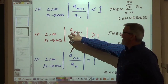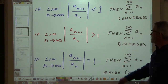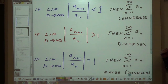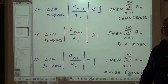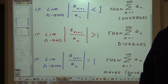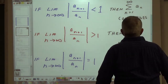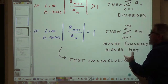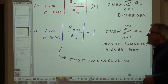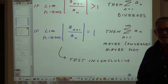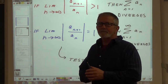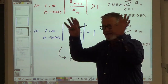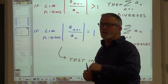What if that limit is greater than 1? If that limit is greater than 1, then we can say definitively by this test that that series diverges. What if that limit is equal to 1? Well, if the limit is equal to 1, then maybe it converges, maybe not — the test is inconclusive and we have to go to another test. So pause and think.